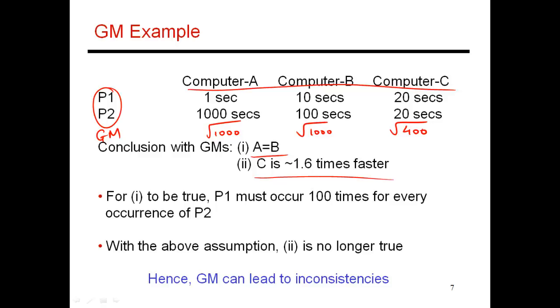Let's try to construct a workload with P1 and P2 which matches these conclusions. The only way to do that is to construct a workload where P1 occurs 100 times for every occurrence of P2. For this particular workload, let's see what the execution times are going to be.